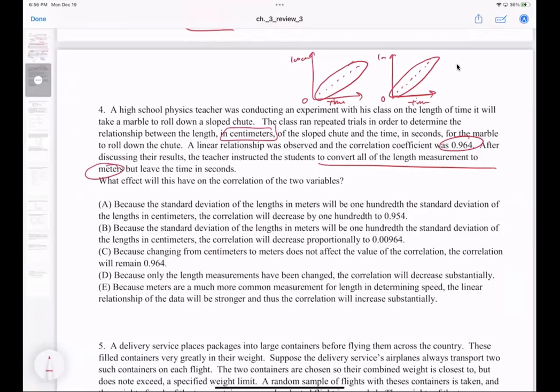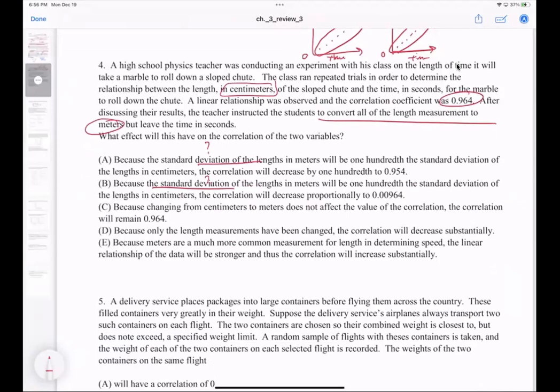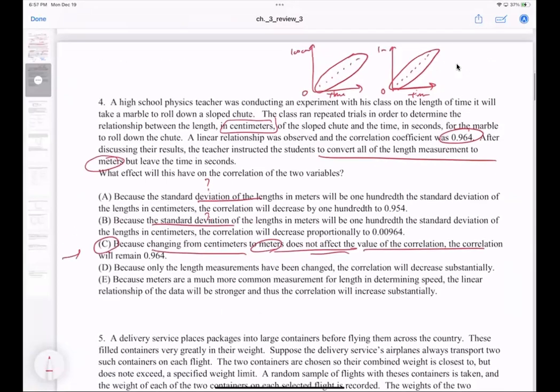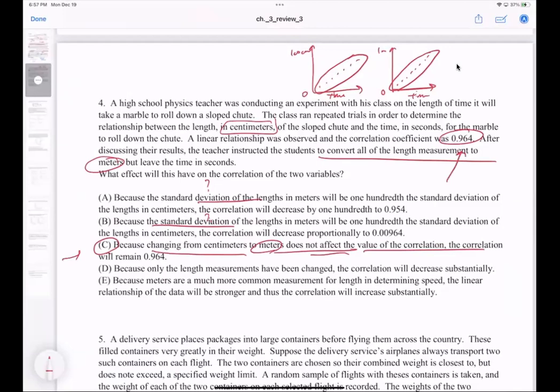In this particular case, changing from centimeters to meters does not affect the value of correlation. Yes, it does not, because the relationship will still stay the same. If they're going to be very strong between time and length, changing into meters will not do anything to the correlation coefficient. Remember, r has no units, so just because you change one unit of the response variable, it's not going to impact the r value whatsoever.